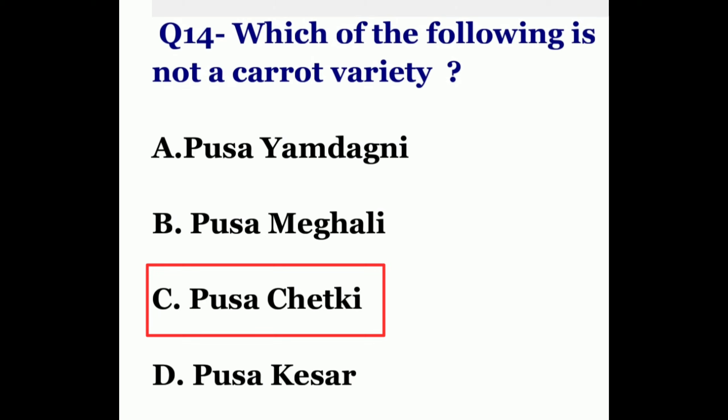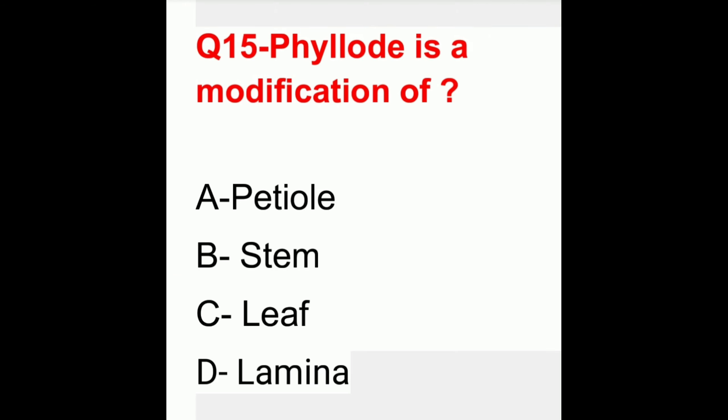Question 15. Phyllode is a modification of? The options are petiole, stem, leaf, or lamina. The correct answer is petiole.